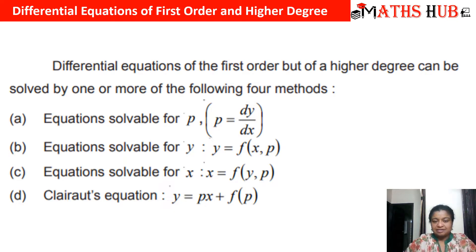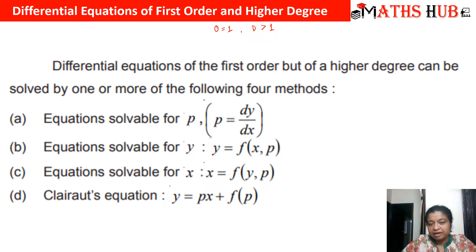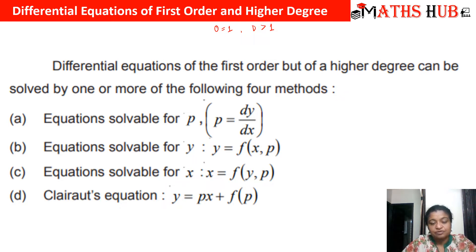First order and higher degree means that the differential equations will have order equal to 1 and degree greater than 1. When we had order 1 and degree 1, we had methods of solving like exact equations, variable separable method, linear differential equations, and equations of the homogeneous kind. Now we will be dealing with higher degree differential equations but they will have order 1 only.